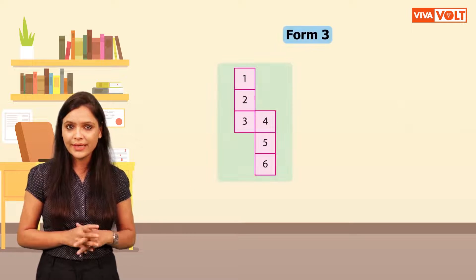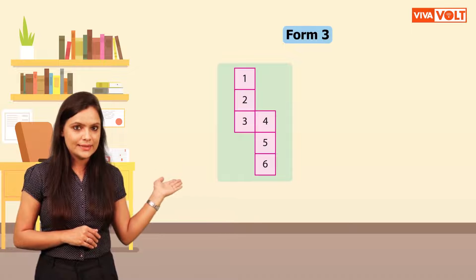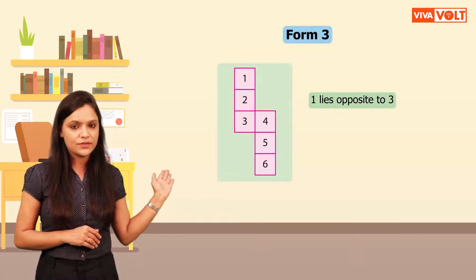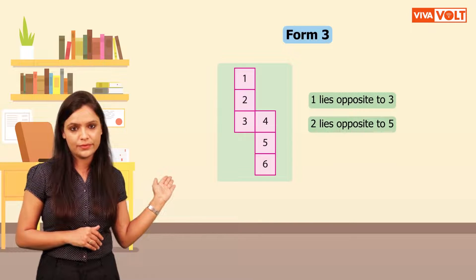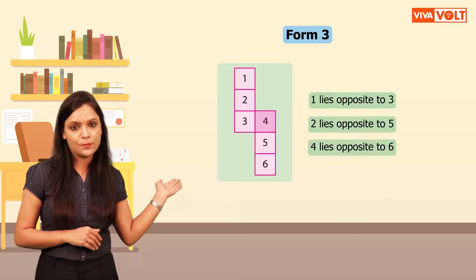Form 3 will look like as shown. In this case, 1 lies opposite to 3, 2 lies opposite to 5, 4 lies opposite to 6.